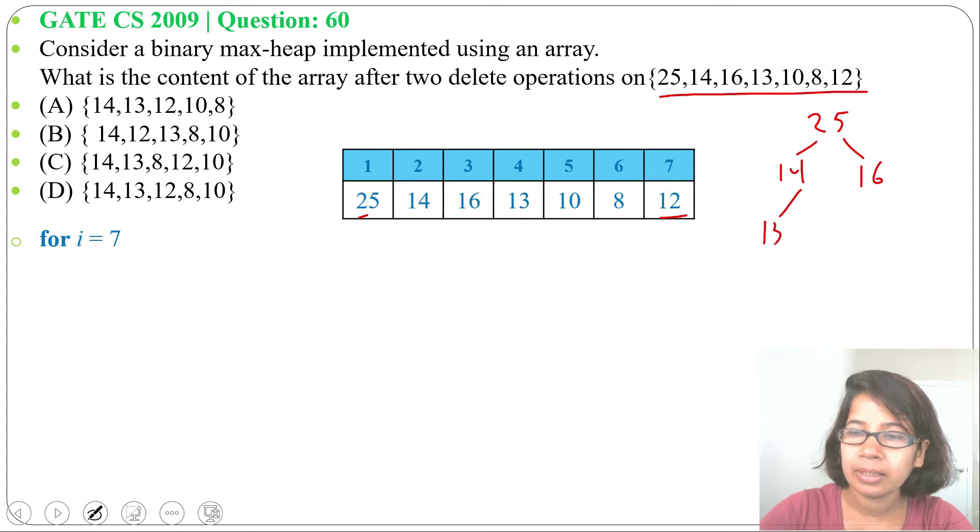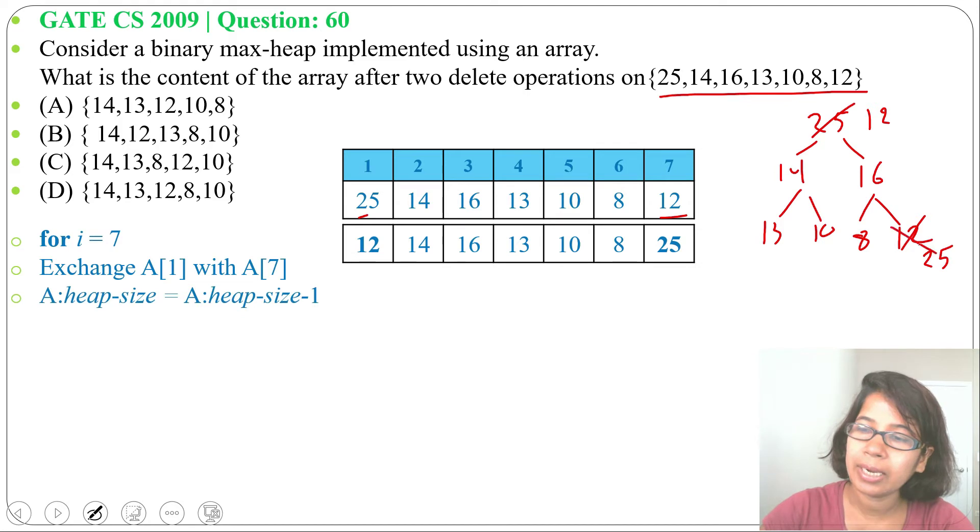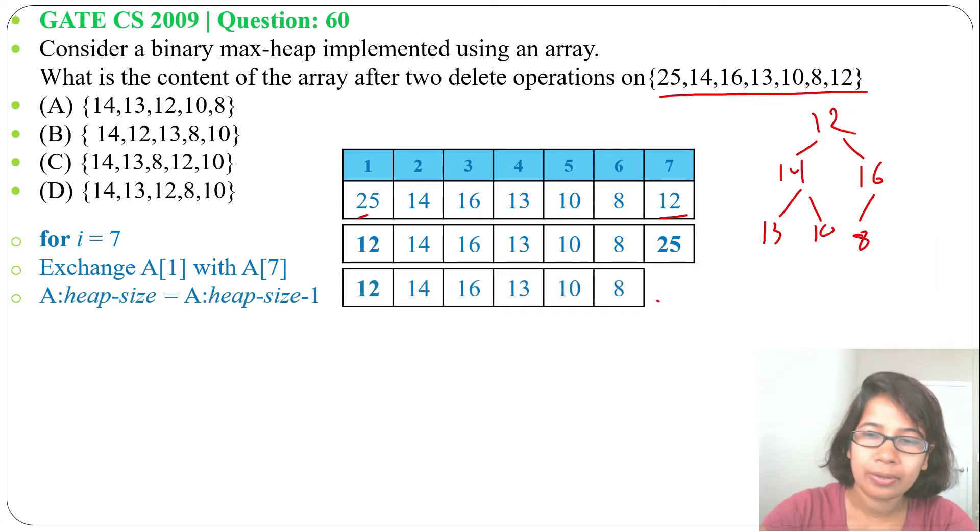Then 13, 10, 8, and 12. So first step we need to exchange, so 12 will be parent and 25 will be last node. Next we'll reduce the heap size, means we'll delete this 25. Now after deletion, array will be this.